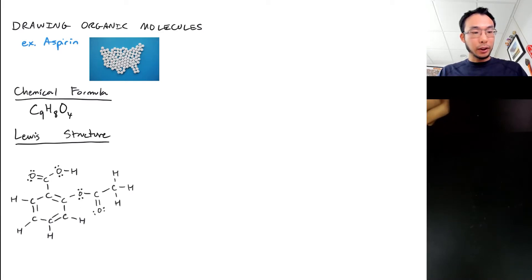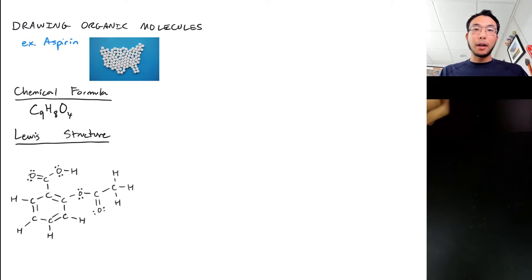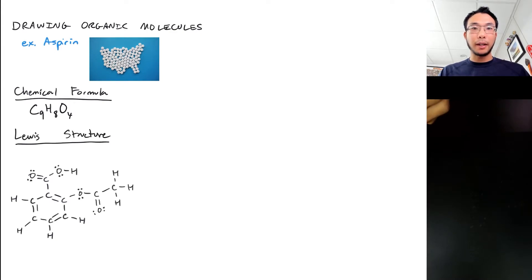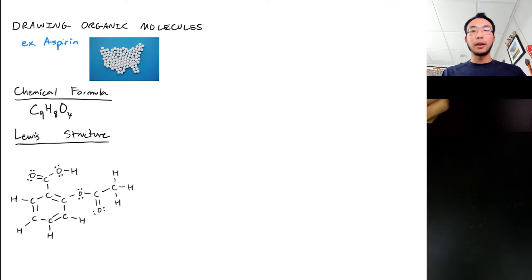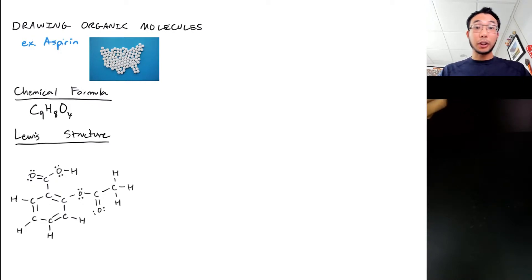It turns out this is the Lewis structure of aspirin. In the end a very simple molecule, but to draw this takes a little bit of time — you've got to go through, write all the letters out, draw the bonds, draw the lone pairs. So organic chemists have come up with a simplified method of drawing that allows us to produce quicker and more effective structures.